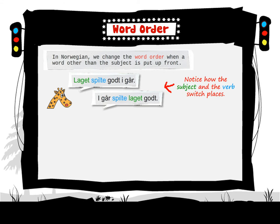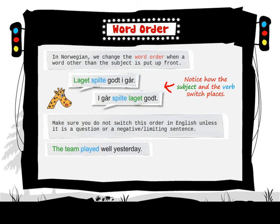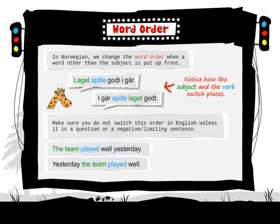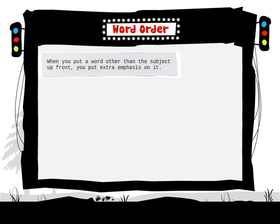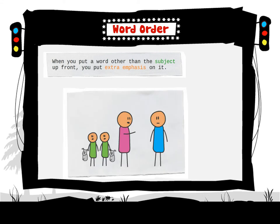Notice how the subject and the verb switch places. Make sure you do not switch this order in English, unless it is a question or a negative or limiting sentence. In English: 'The team played well yesterday.' and 'Yesterday, the team played well.' When you put a word other than the subject up front, you put extra emphasis on it.